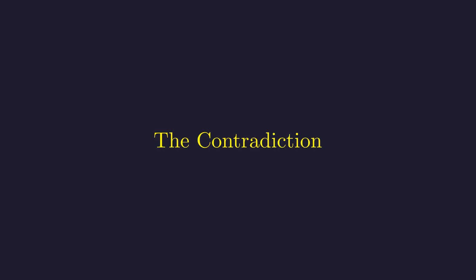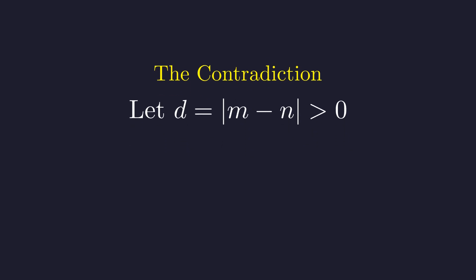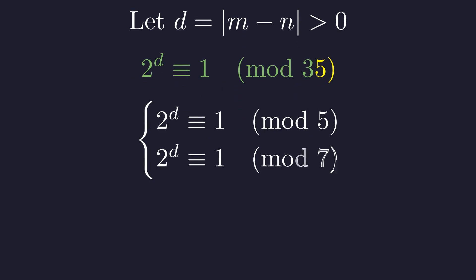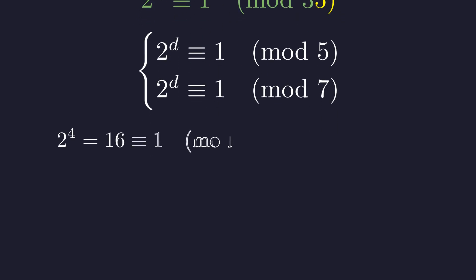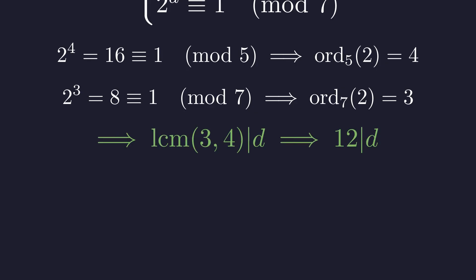We now have two conditions for the same integer. Let d = |m − n|, which is a positive integer. From our second condition, 2^d ≡ 1 (mod 35). Since 35 = 5 × 7, this implies 2^d ≡ 1 (mod 5) and 2^d ≡ 1 (mod 7). The order of 2 modulo 5 is 4, so 4 divides d. Since 2^3 = 8 ≡ 1 (mod 7), the order of 2 modulo 7 is 3, so 3 divides d. For d to be a multiple of both 3 and 4, it must be a multiple of their LCM, which is 12.